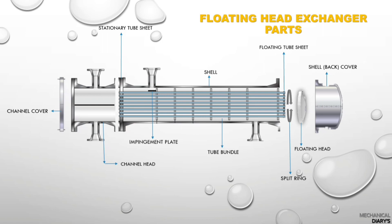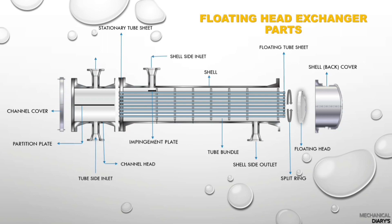One more important part is called the impingement plate. This plate is always placed on the shell side inlet nozzle, because the inlet pressure should not affect the tube bundle directly — that is why it is placed on the shell side nozzle area. Next is the channel head partition plate, which is used to divert the flow from one end to another.